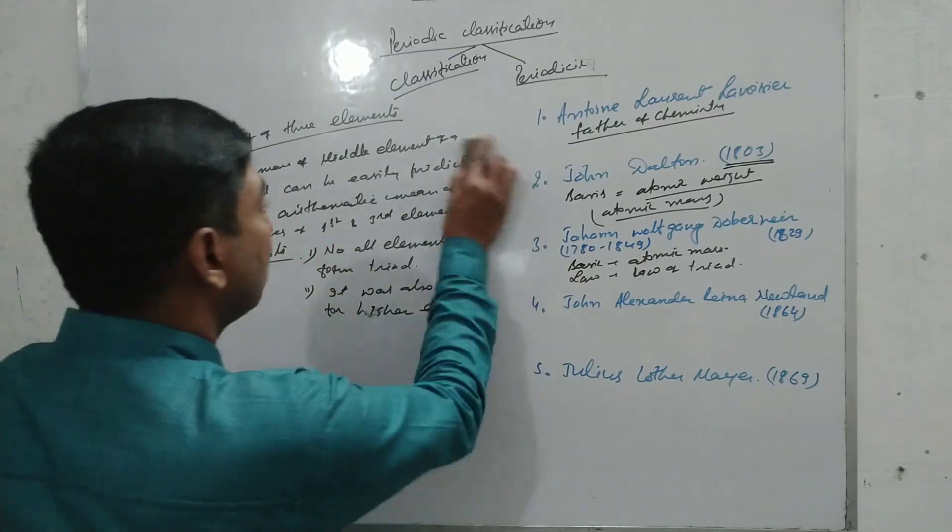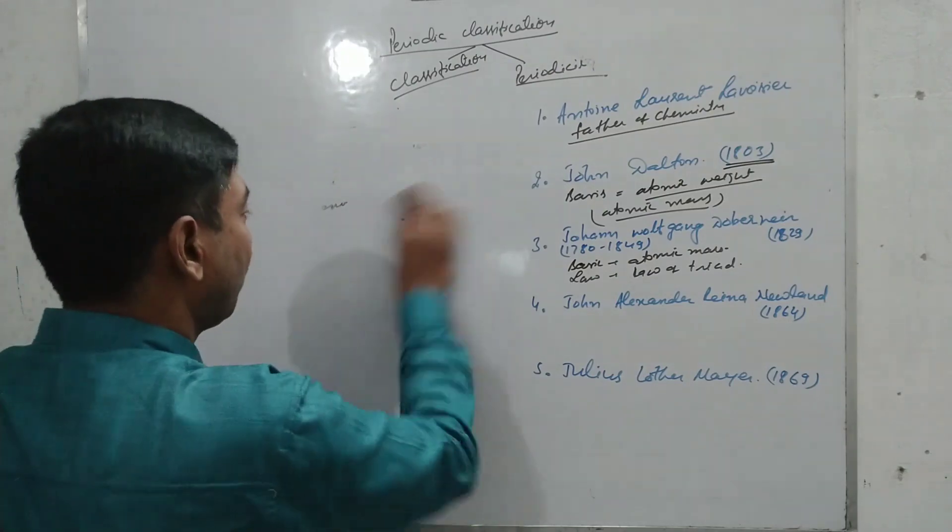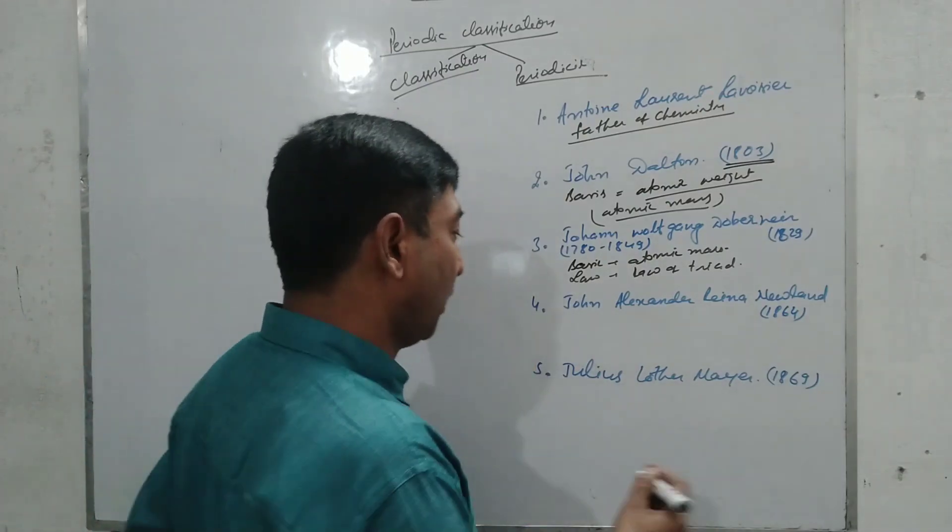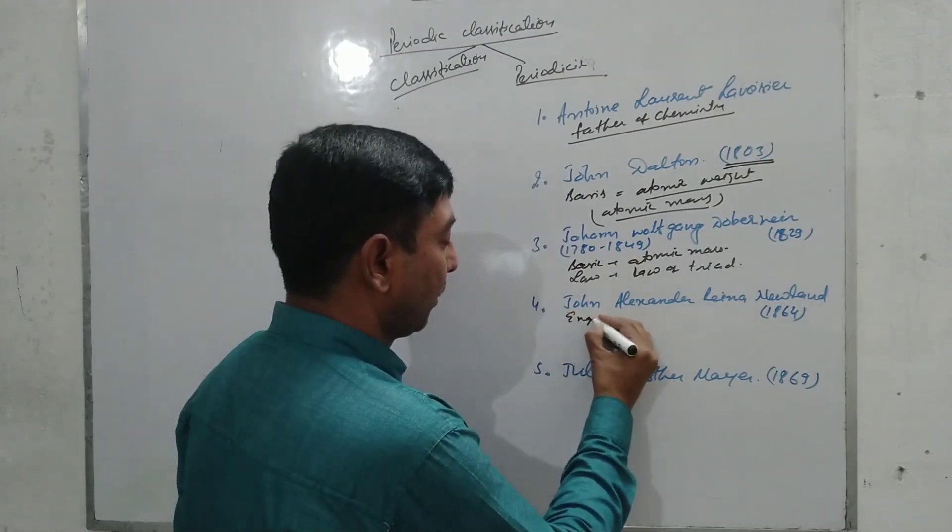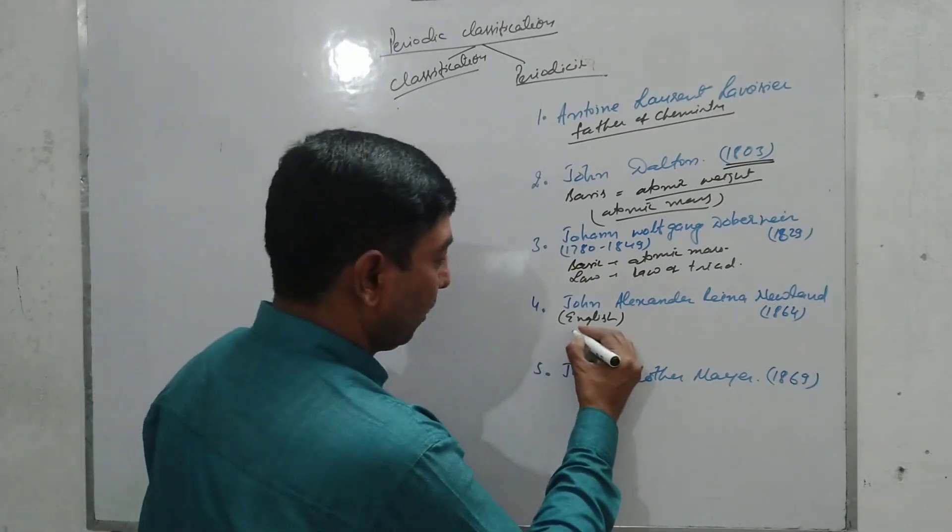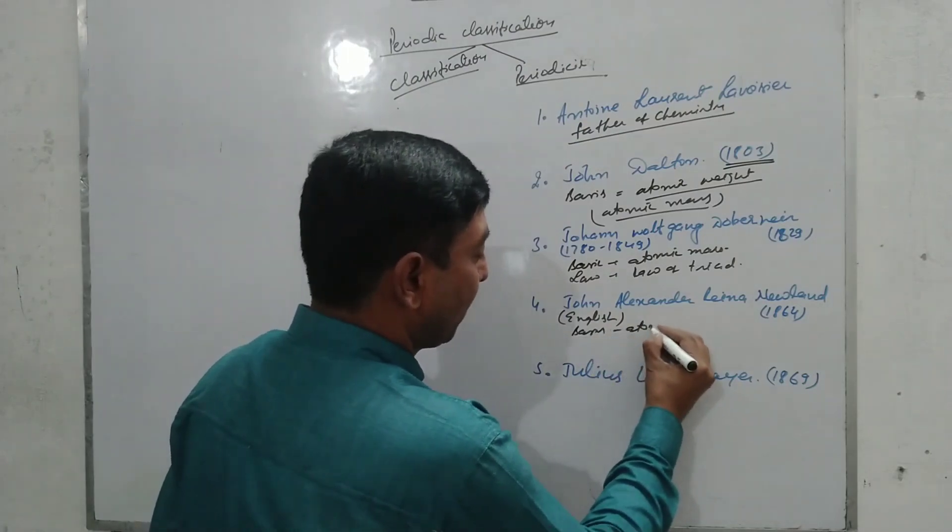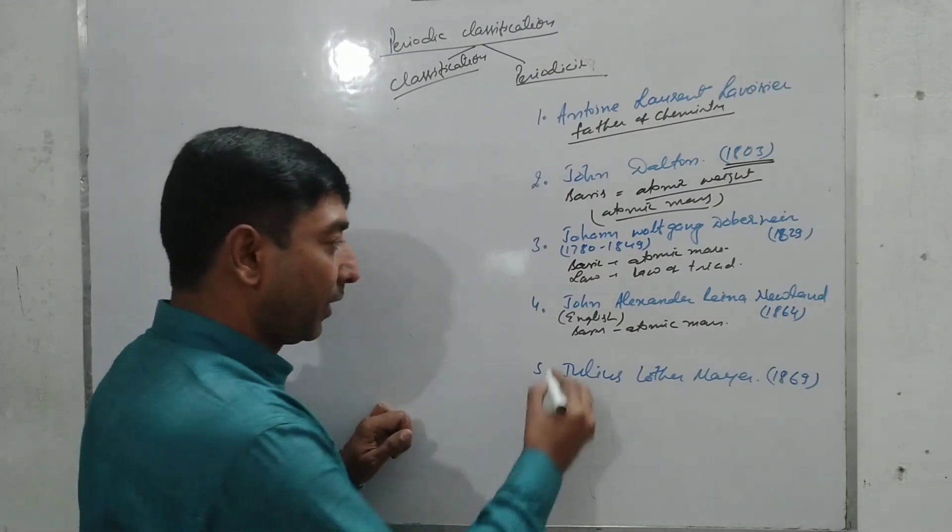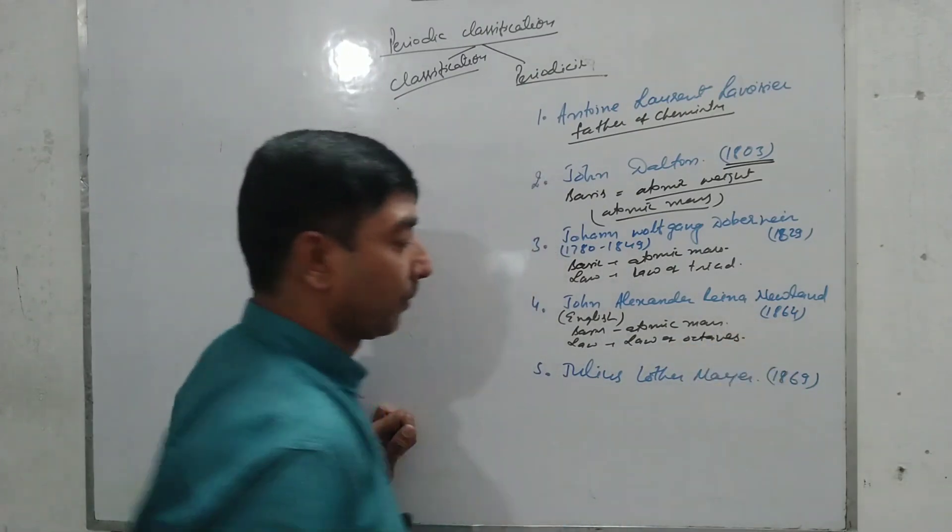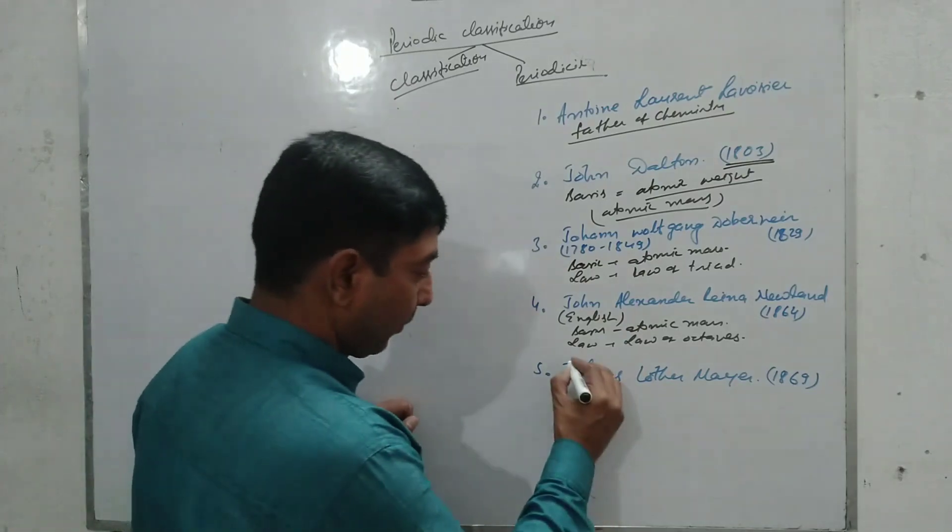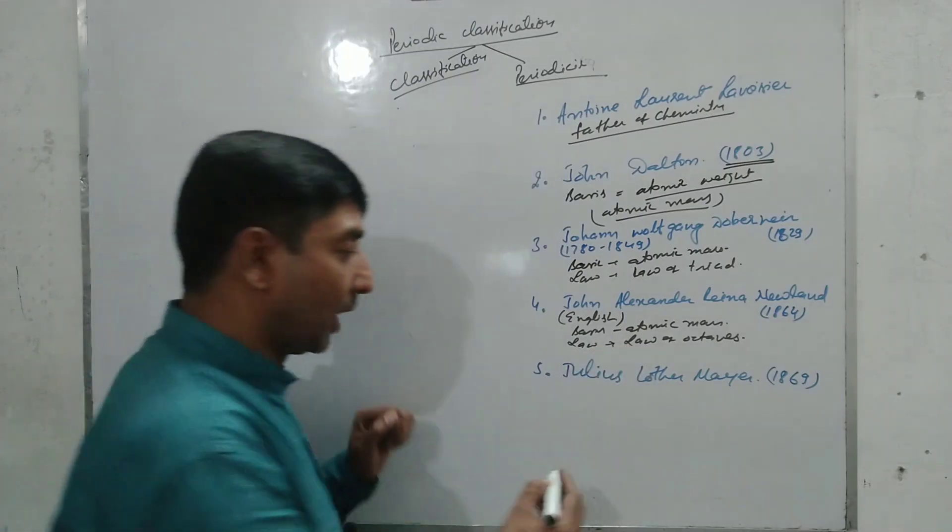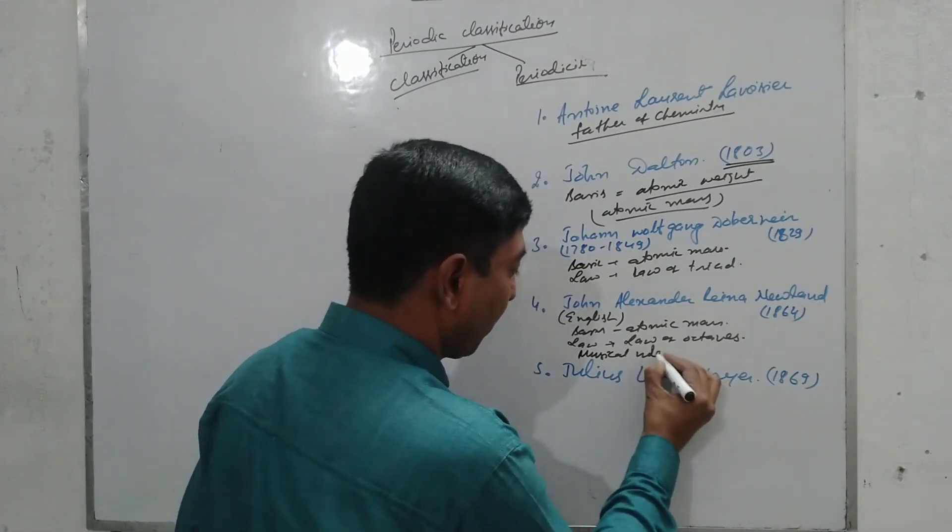Now I'm coming to the next classification, the next scientist to classify the elements, and it was John Alexander Newlands. He was an English scientist. He classified elements on the basis of atomic mass. He formulated a law known as law of octaves.